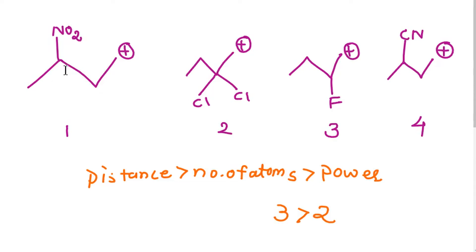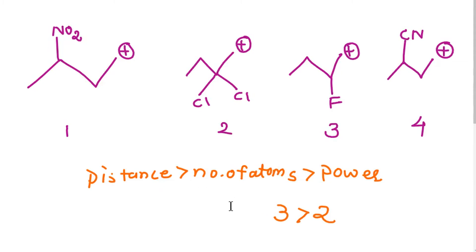Now for examples 1 and 4: the distance of NO2 and CN from the carbocation is the same, and the number of atoms is also 1 for both. So we check the power: the withdrawing power of NO2 is greater than CN. Therefore NO2 withdraws more electrons, making that carbocation more unstable. So the stability order is: 4 > 1 > 3 > 2.